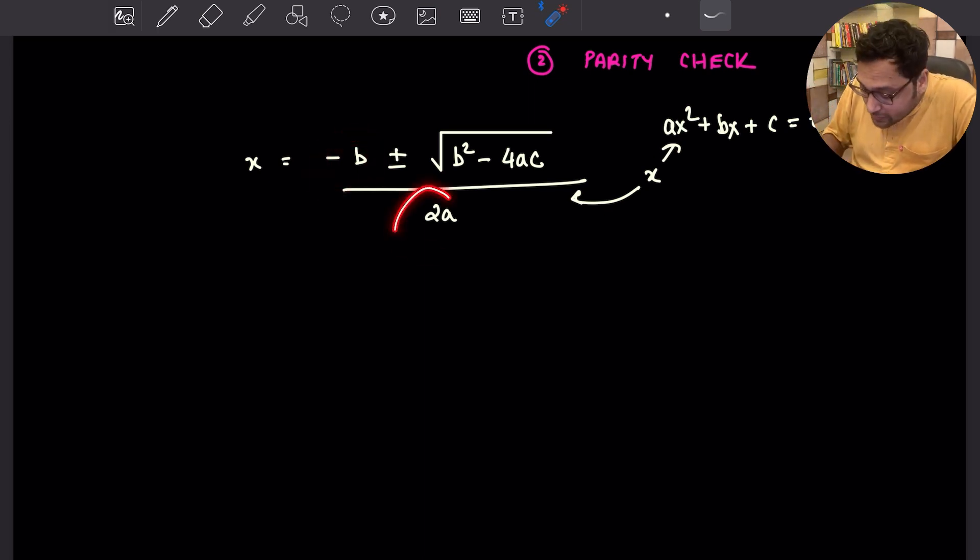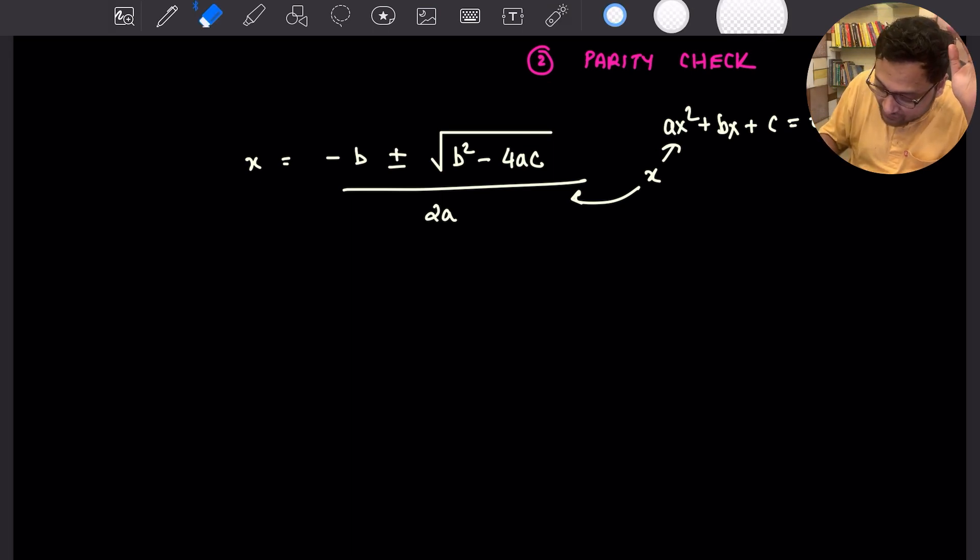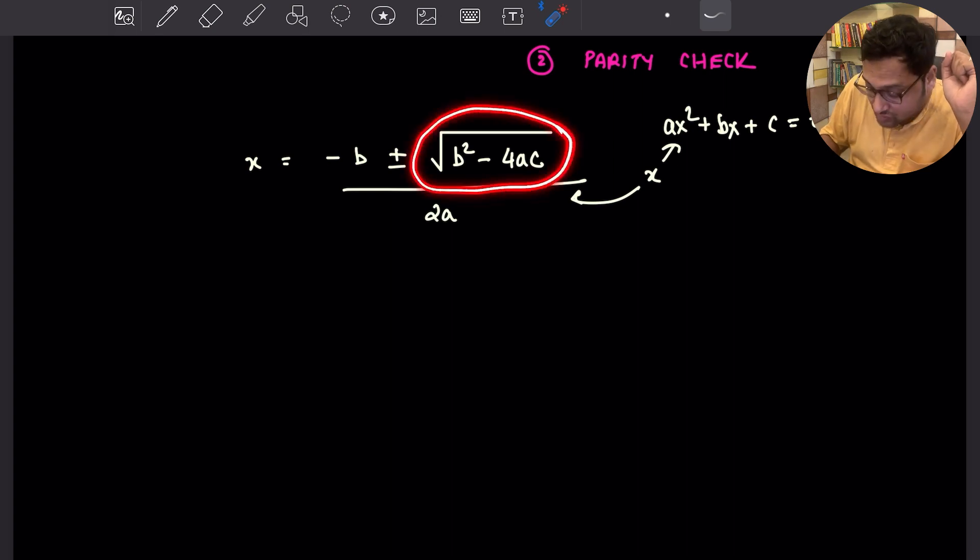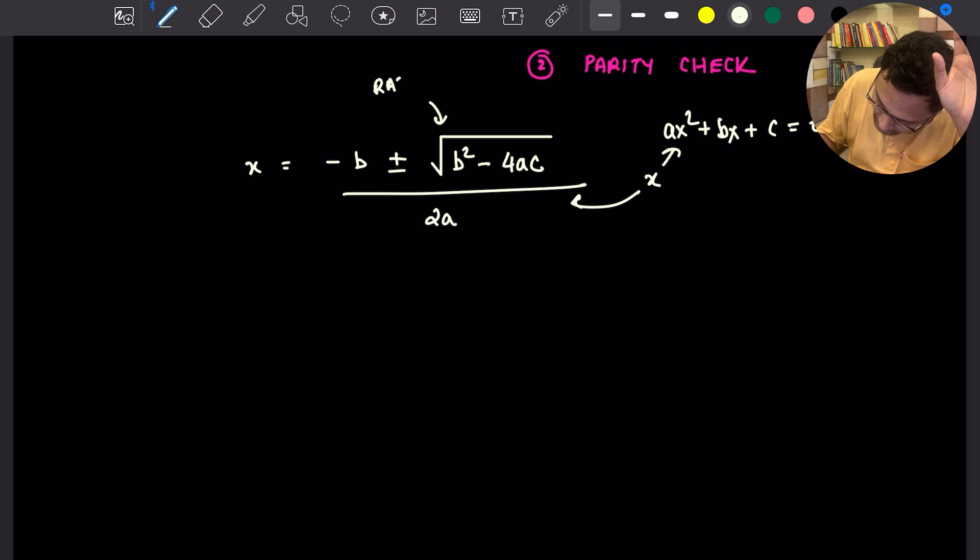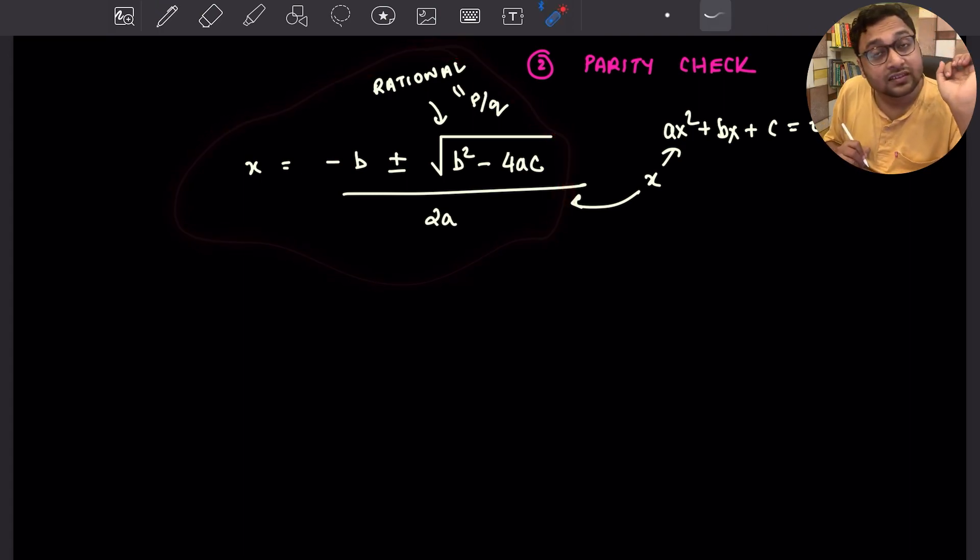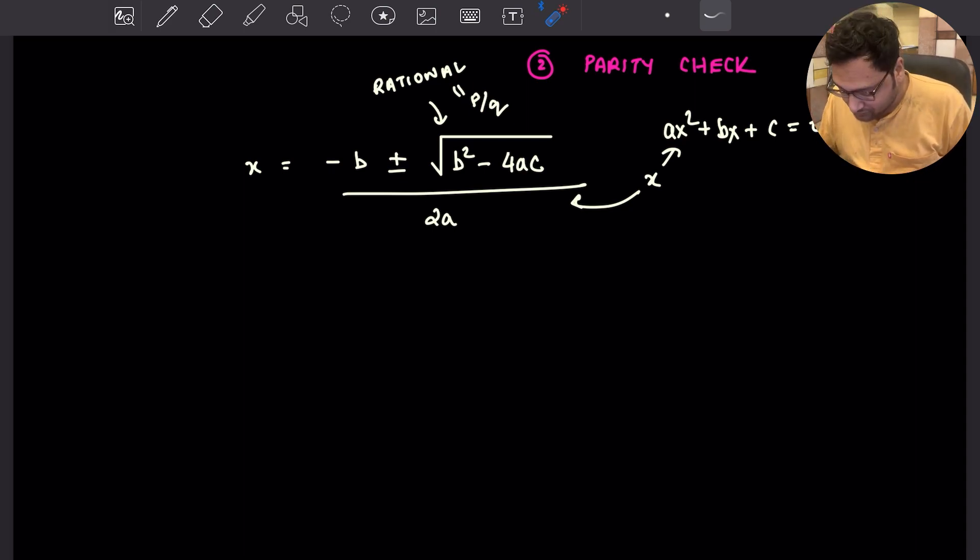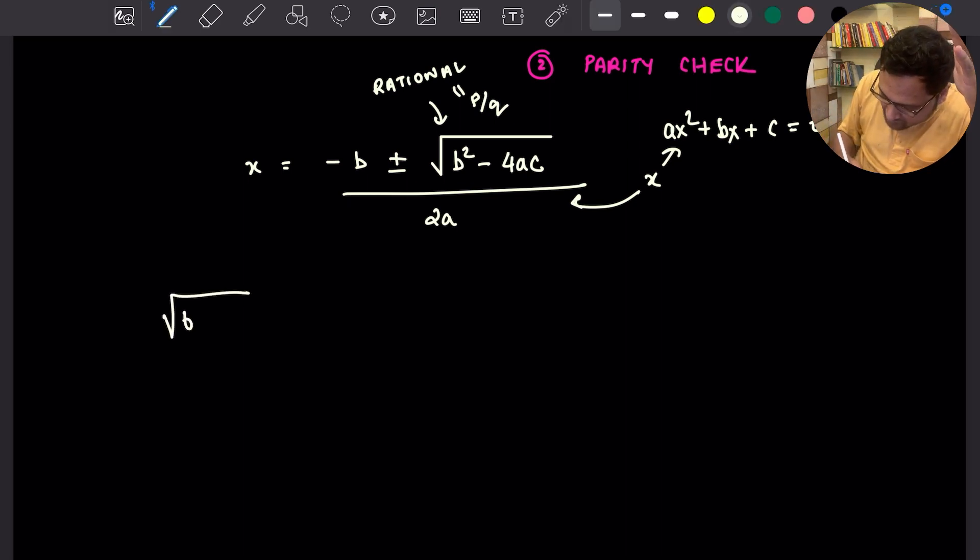So B is an integer, 2A is an integer. So the only way it can fail to be a rational number, if the stuff under the square root, this quantity is not rational. If this one is rational, then the entire thing will become rational. If this is irrational, then the entire thing will become irrational. There is a little bit of work that needs to be done there, but it's kind of understood. So we want to show that square root of B square minus 4AC is not rational.